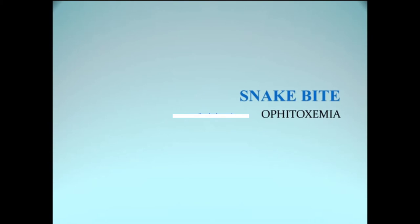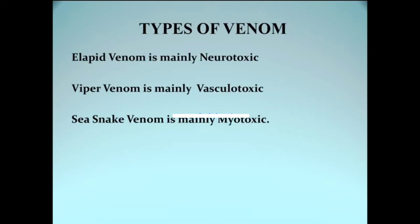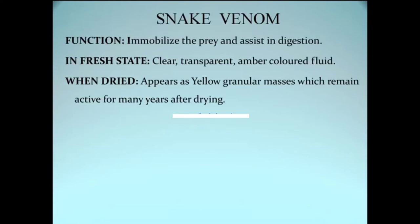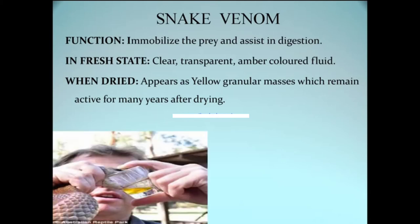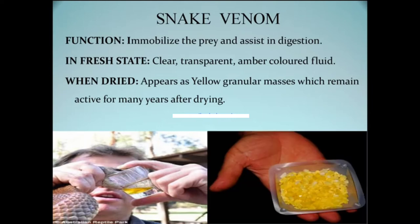We now come to Ophitoxemia, the other word for snake bite. There are three types of snake venom depending on the families: Elapid venom is mainly neurotoxic, Viper venom is vasculotoxic, and sea snake venom is predominantly myotoxic. The function of venom is to immobilize the prey and assist in its digestion. When fresh, it is a clear, transparent, amber-colored fluid. When dry, it forms granular yellow masses that can remain active for years.